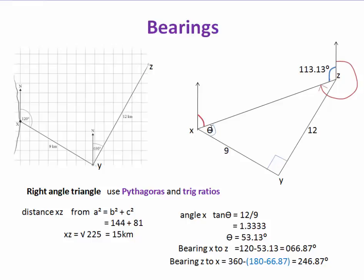The angle at X is found using trigonometry — SOH CAH TOA. Tan theta equals opposite over adjacent: 12 over 9 equals 1.33, so inverse tan gives theta equals 53.13 degrees. The bearing from X to Z is the total angle of 120 degrees minus theta, which gives 66.87 degrees.